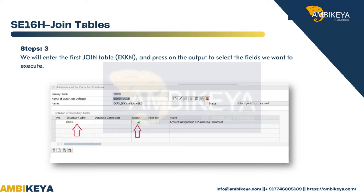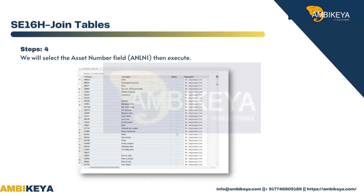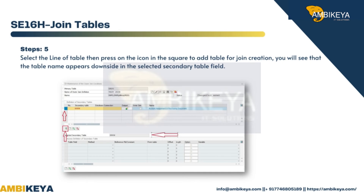Step 3: We will enter the first join table EKKN and press on the output to select the fields we want to execute. Step 4: We will select the asset number field ANLN1, then execute.